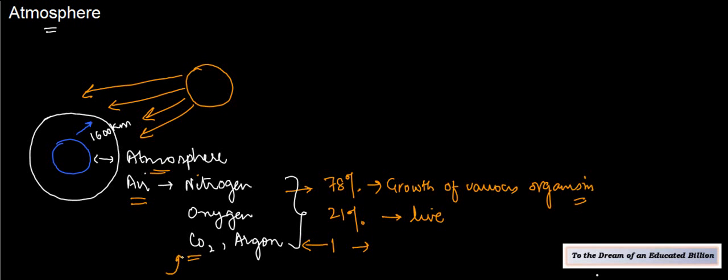Carbon dioxide basically absorbs the heat which is radiated by earth. So whatever heat flows from earth, that is absorbed by carbon dioxide, and it doesn't allow it to escape, and therefore helps in keeping the planet warm.